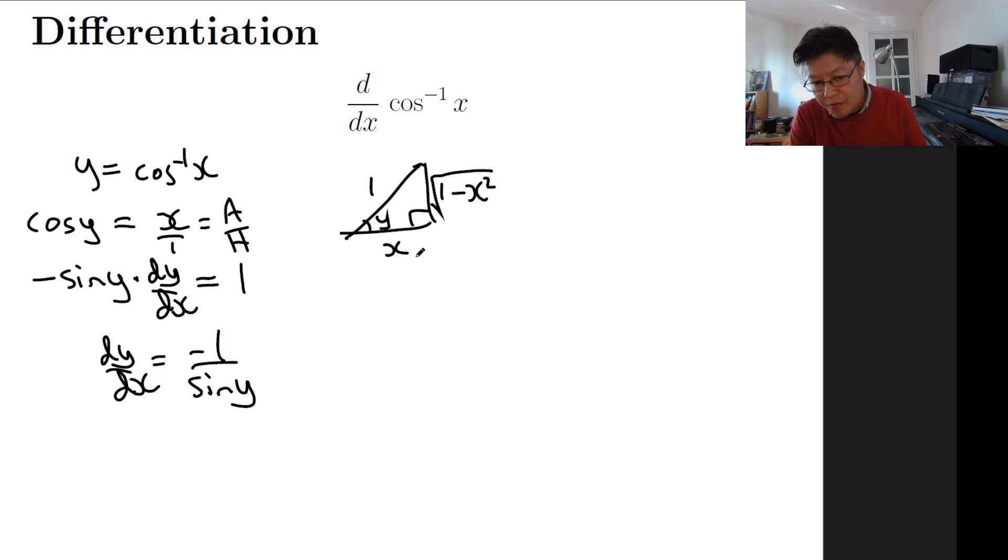And now from this we can get sin y. So we know that sin y is opposite over hypotenuse, so that will equal 1 minus x squared all rooted over the hypotenuse, which is a 1. So it's just 1 minus x squared all rooted.